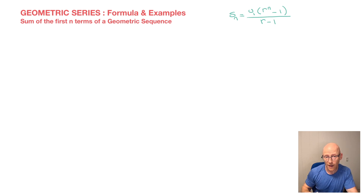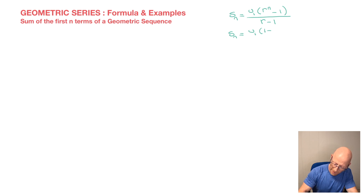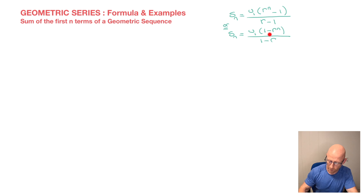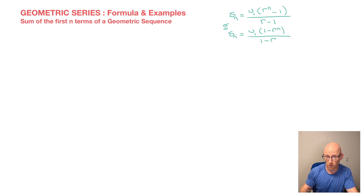We can also write this formula as S sub n equals u sub 1 times in parentheses 1 minus r raised to the power of n, all over 1 minus r. Regardless of which of these two formulas we use, we'll get the same result in the end. Both of these formulas are in fact equal, so it really doesn't matter which of the two you end up choosing.